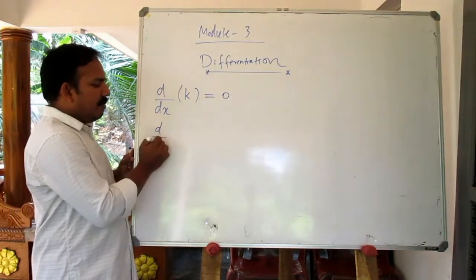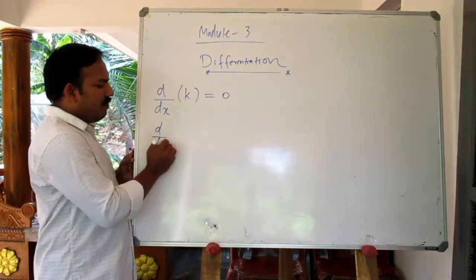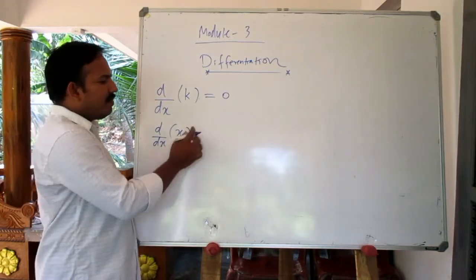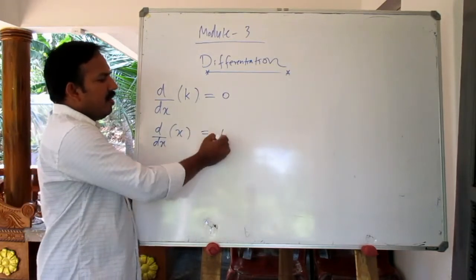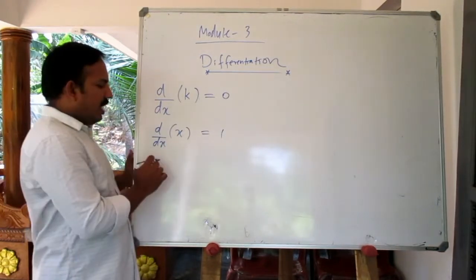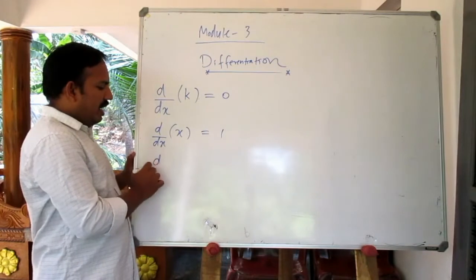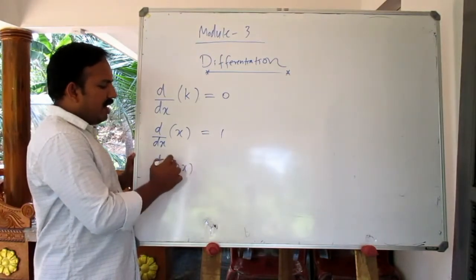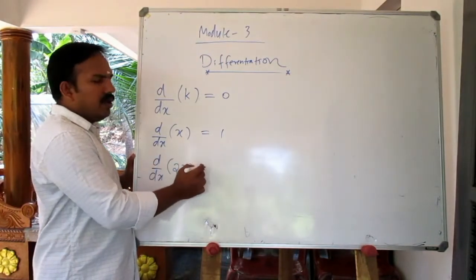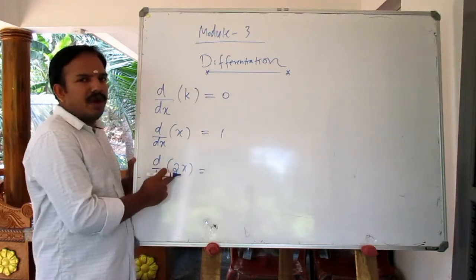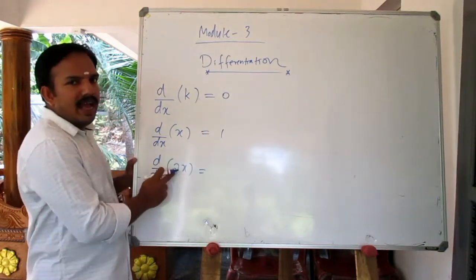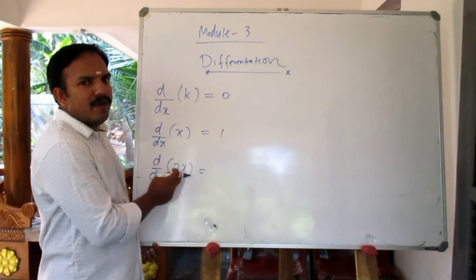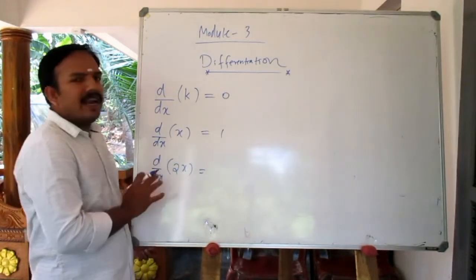d by dx of x — the derivative of x is 1. Now, d by dx of 2x: the derivative of the constant 2 on its own would be 0, but here we differentiate x, so x is the variable. The derivative of 2x involves the coefficient of x.